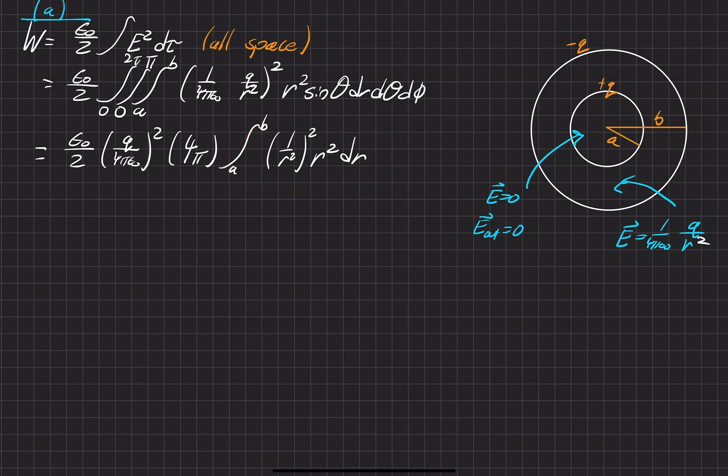Ends up being just the integral of 1 over R squared. Because this will end up being R to the 4th.